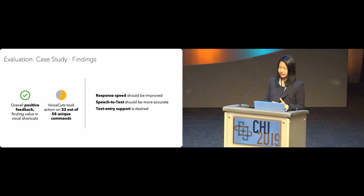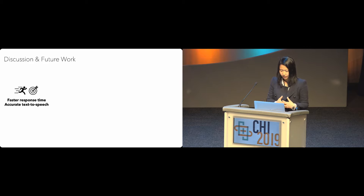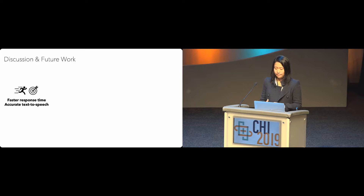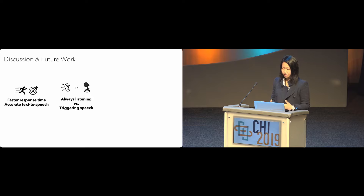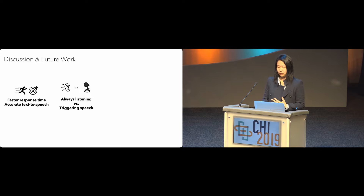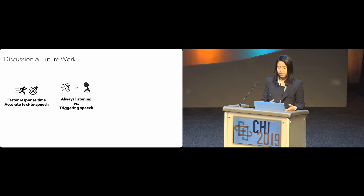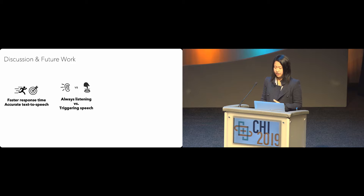In future systems, we can improve response time and speech-to-text accuracy by using a local engine instead of a cloud API, and provide a set of short phrases commonly used in Photoshop as hints so the engine can prioritize them. In VoiceCuts, users must trigger the speech panel before issuing a command, but contrary to our expectation, almost all participants wanted a system that was always listening rather than trigger-based, describing their quiet private work environment and finding button-triggering distracting. Important future work will investigate the effect of different listening mechanisms to identify which is best for creative application contexts.